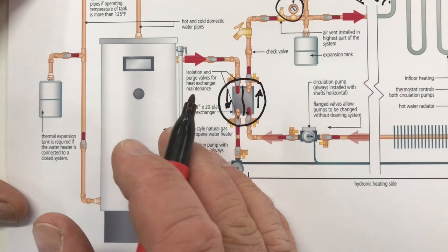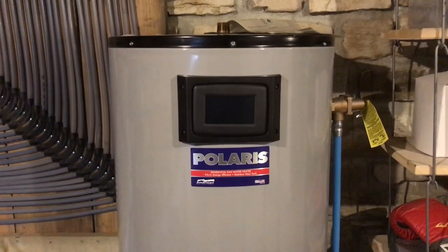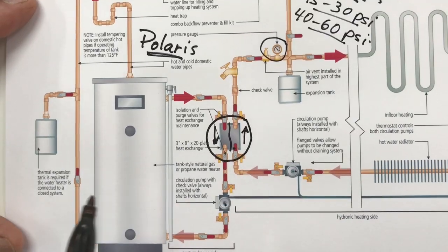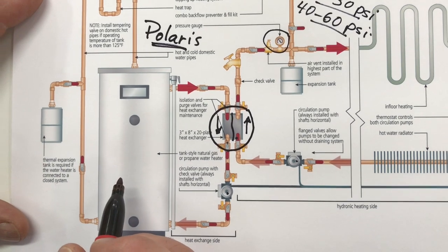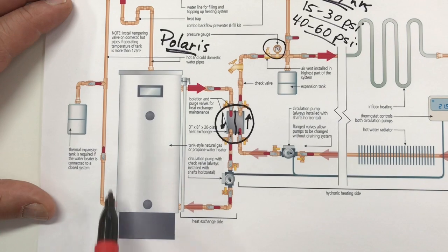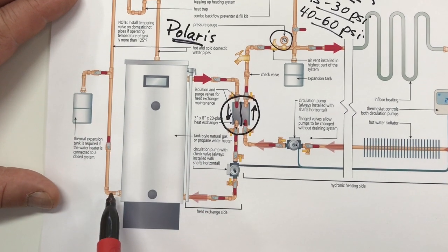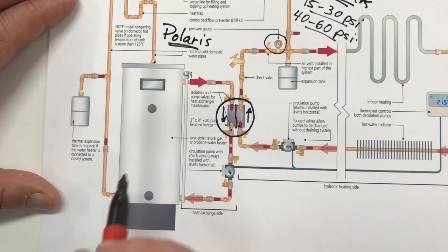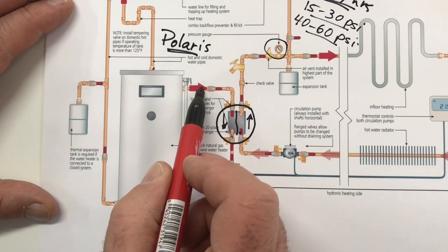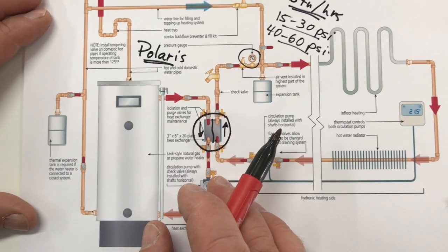The unit that I'm using is called the Polaris and it's made by a North American company called AO Smith and they specifically build this tank style water heater for this application. That's one reason they put on two pairs of taps here. We have the cold and the hot for your domestic side and then the return and the outflow here on the side of the tank for your hydronic heating system.